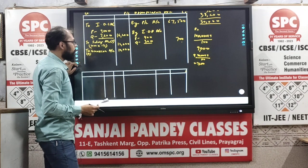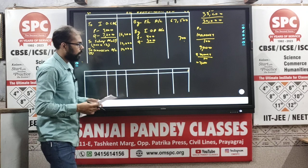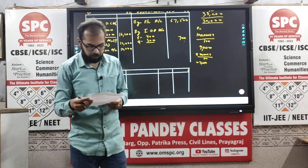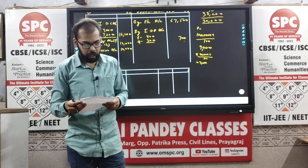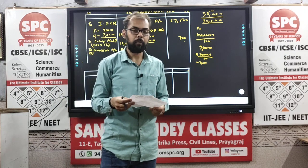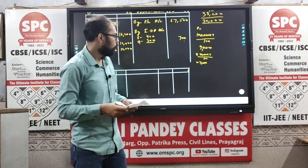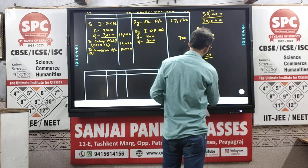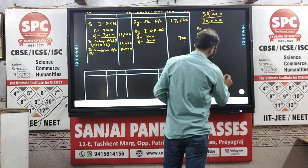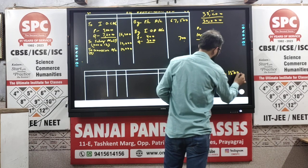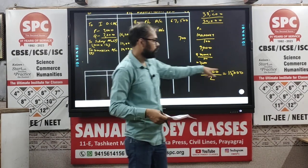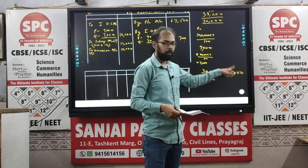Let us check if there is any profit sharing ratio mentioned. In the question, there is no profit sharing ratio mentioned. In that case, profits are distributed equally. So that 30,000 will be distributed between P and Q equally. Dividing 30,000 by 2 gives 15,000 — which is for both P and Q.